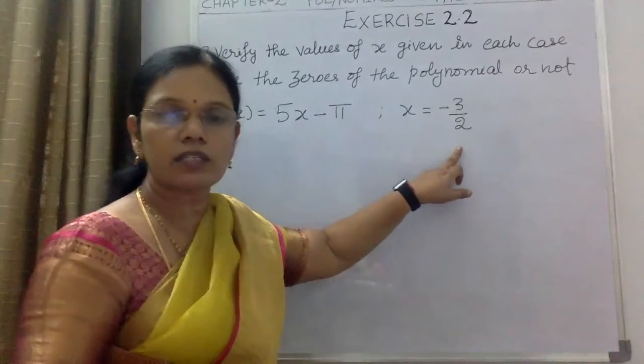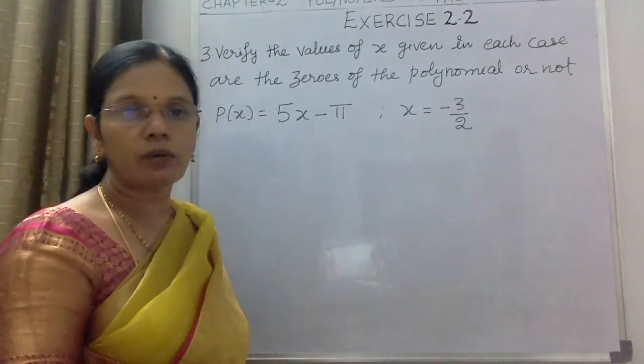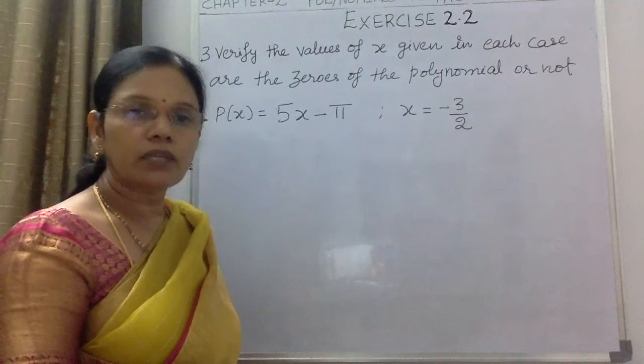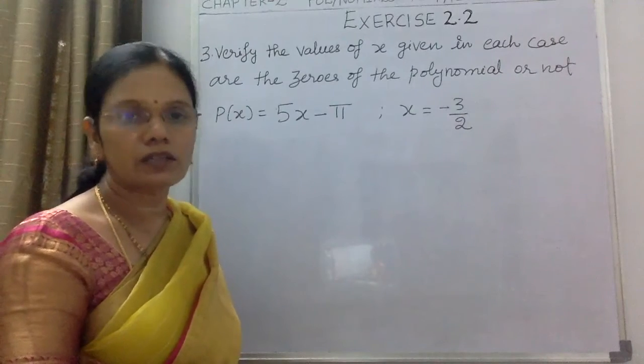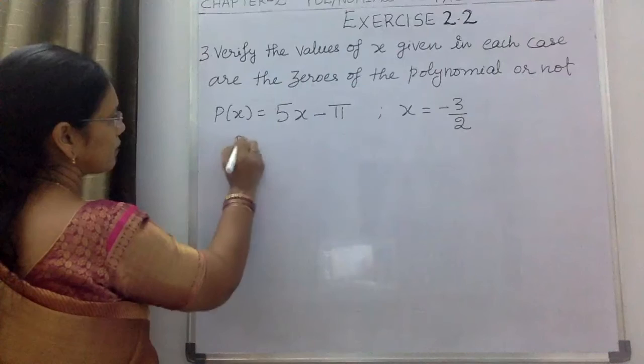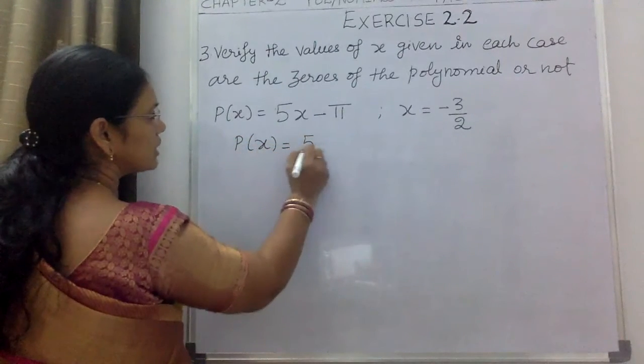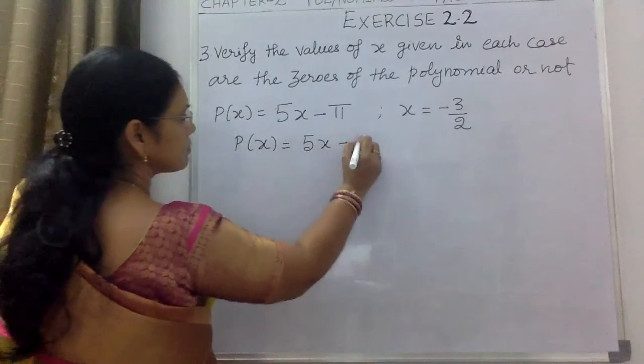Let us substitute x = -3/2 and verify whether it is a zero of the polynomial. If it is, the answer should be 0 after substitution. The given expression is P(x) = 5x - π.